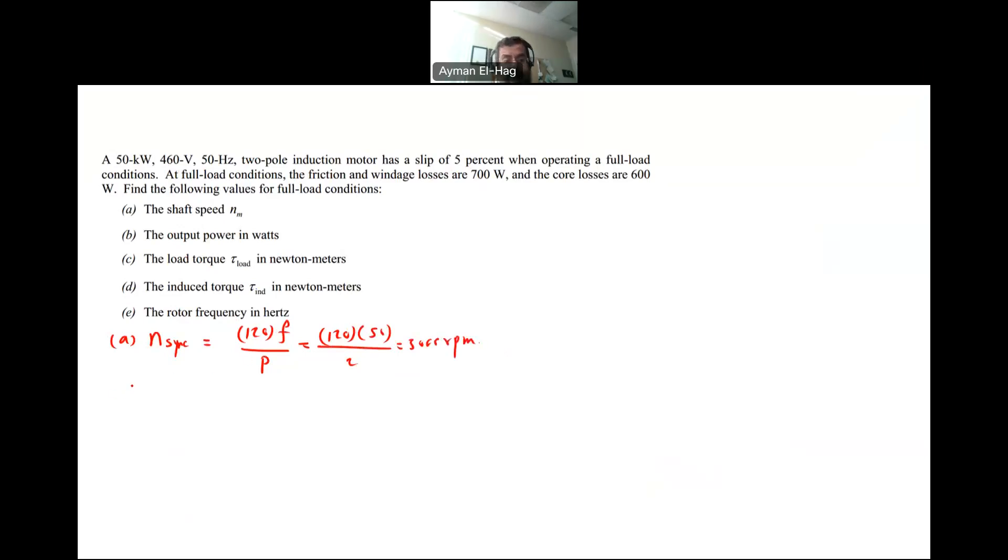I know Nsynchronous, now I can find my Nm, which is basically nothing but 1 minus S times NS, which is equal to 1 minus the 5% times the 3000, and this will give me 2850 RPM. So this is part A.